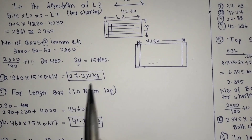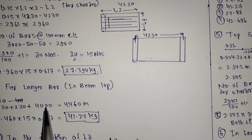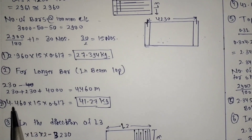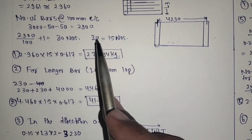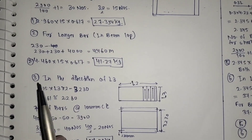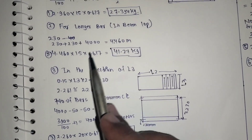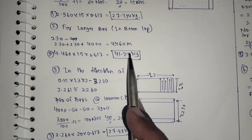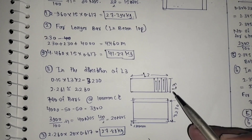With 50 numbers in that direction, we get 41.727 kg for the longer beam bars. In the direction of L3, for the same calculation we take 0.15 from each side.